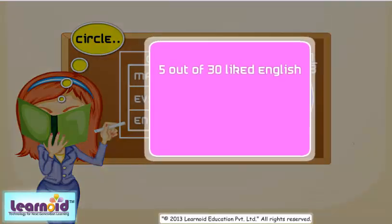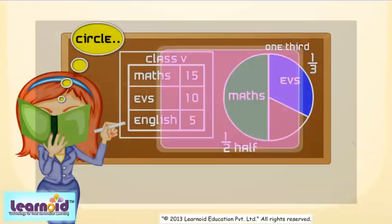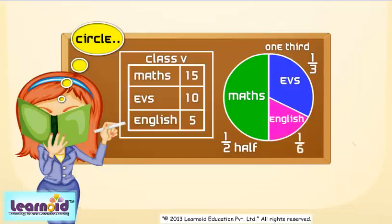5 out of 30 like English. 5 by 30 of the circle represents English. That is 1 by 6 of the circle represents English. Color it pink.